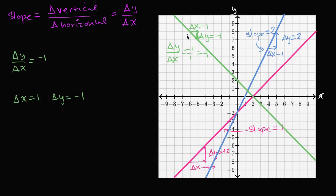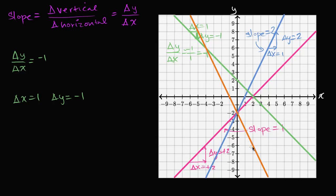If you had a slope of negative two, it would decrease even faster. As x increases by one, y would decrease by two. So it would look like that. Notice, as our x increases by a certain amount, our y decreases by twice as much. So this right over here has a slope of negative two.